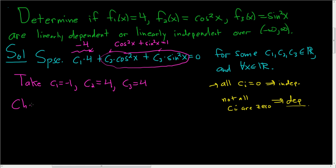Let's check. So let's see. We have c1, which is negative 1, times 4, plus c2, which is 4, so 4 cosine squared x, plus 4 sine squared x. And the claim is that this is equal to 0, in which case we'll be done and the answer will be dependent.